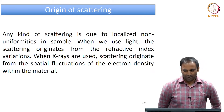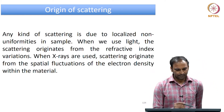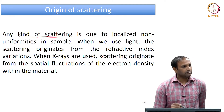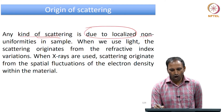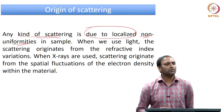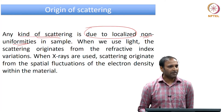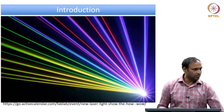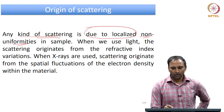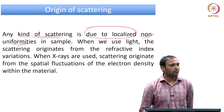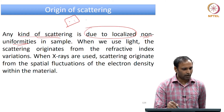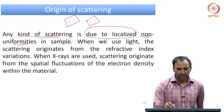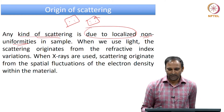The origin of scattering - any kind of scattering - is due to what is called localized non-uniformities in the sample. This becomes clear from the previous example: if I had only clean air, you won't see these effects. You need to have localized non-uniformities. In this case, what I mean is you should have maybe air with some particles, or liquid with some particles. The particles in that case constitute non-uniformities in the sample.